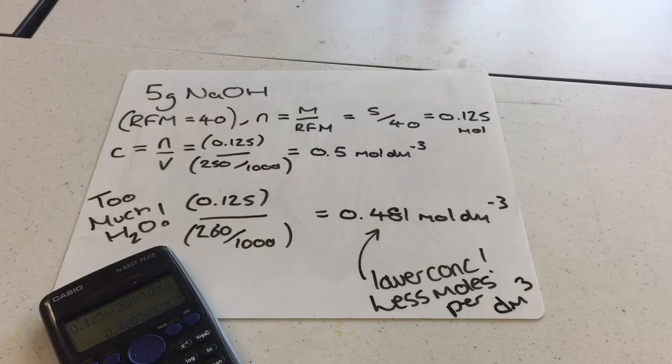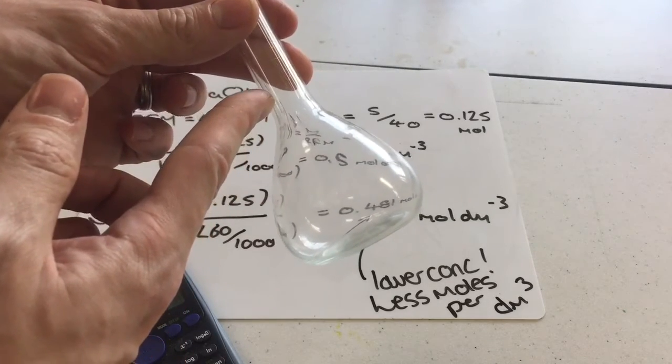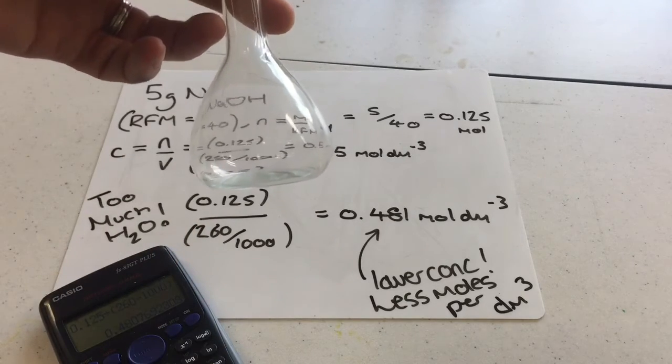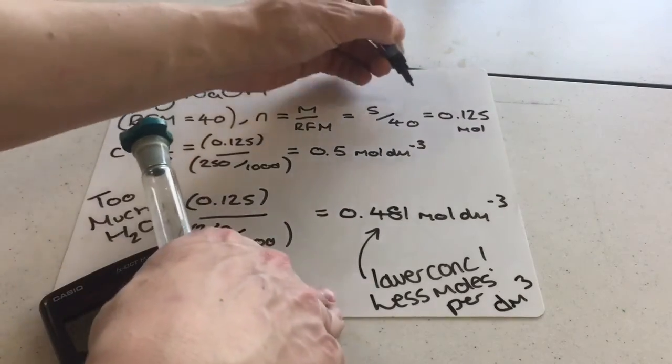So why is that such a problem, and why do we insist that you only fill up with deionised water up to the little mark here? Well, first off, you fill up to the little mark, and it's the meniscus that you're looking for. There will be a little water line in there because of water tension.